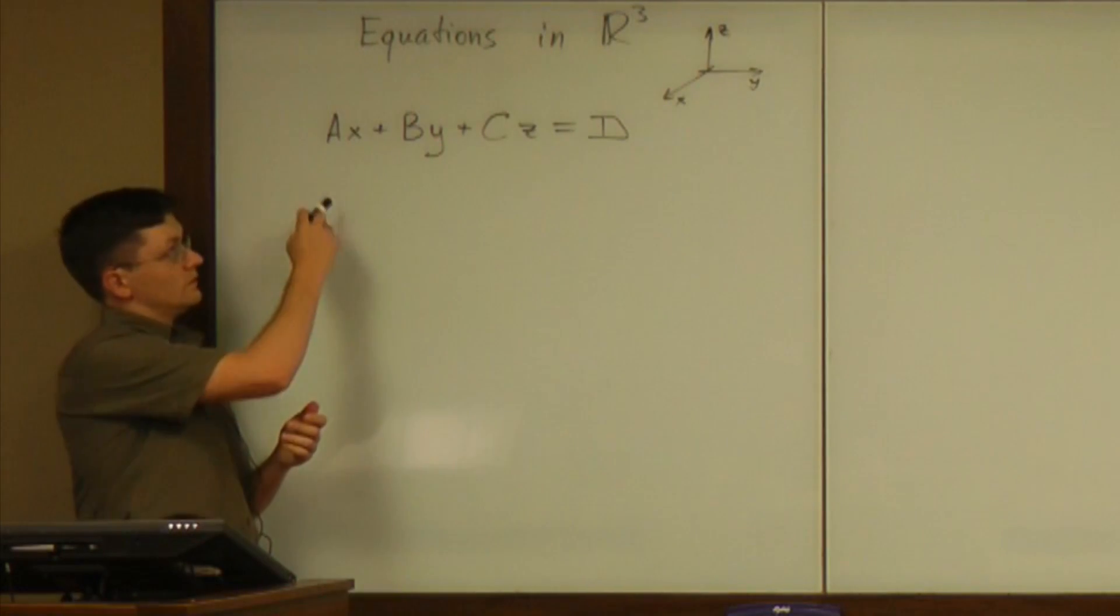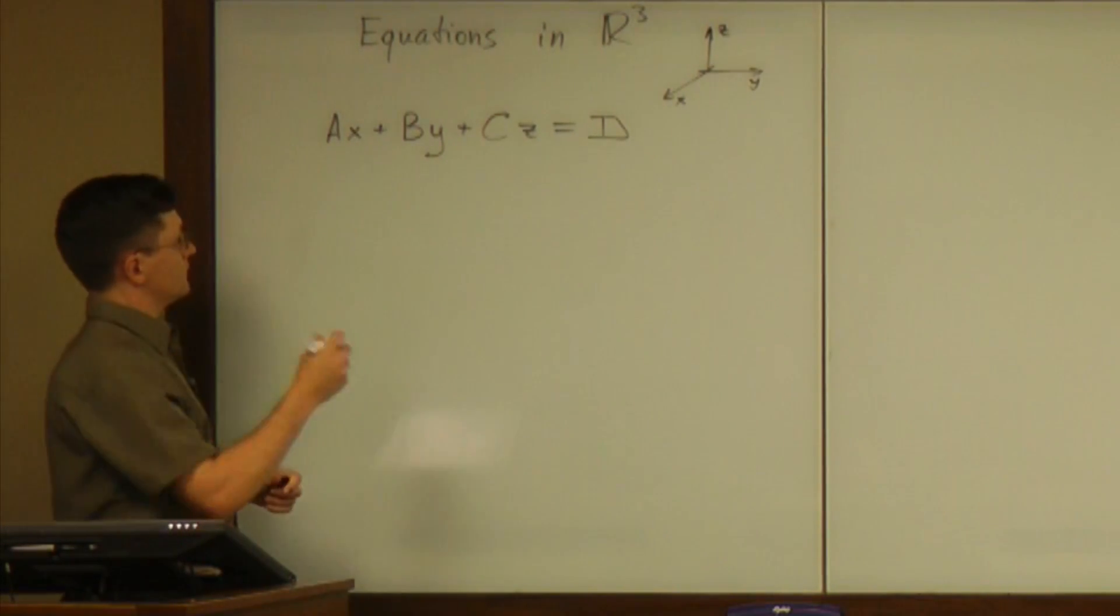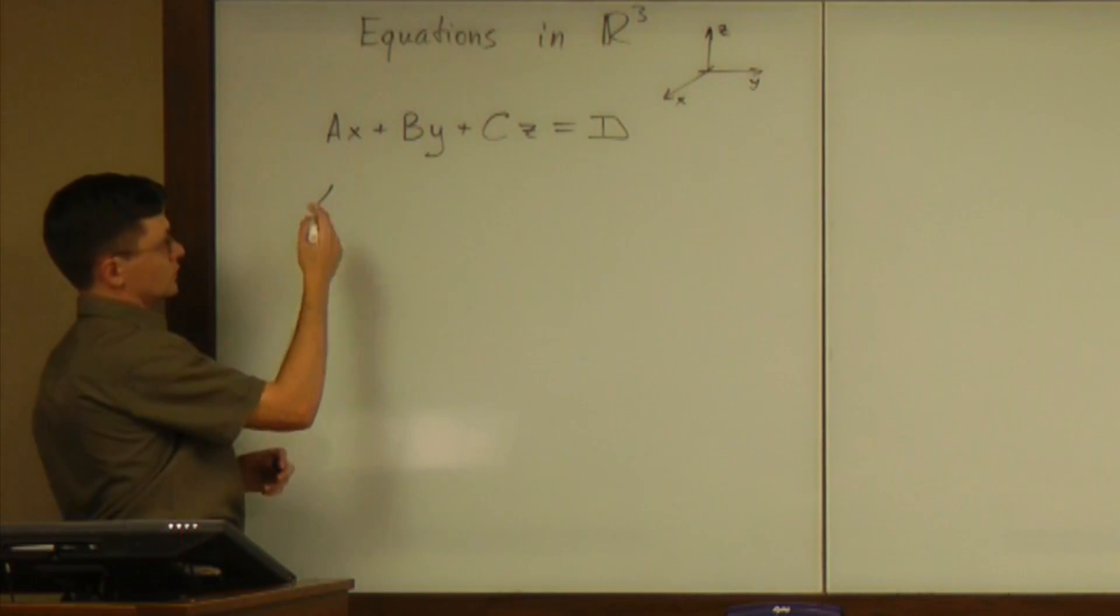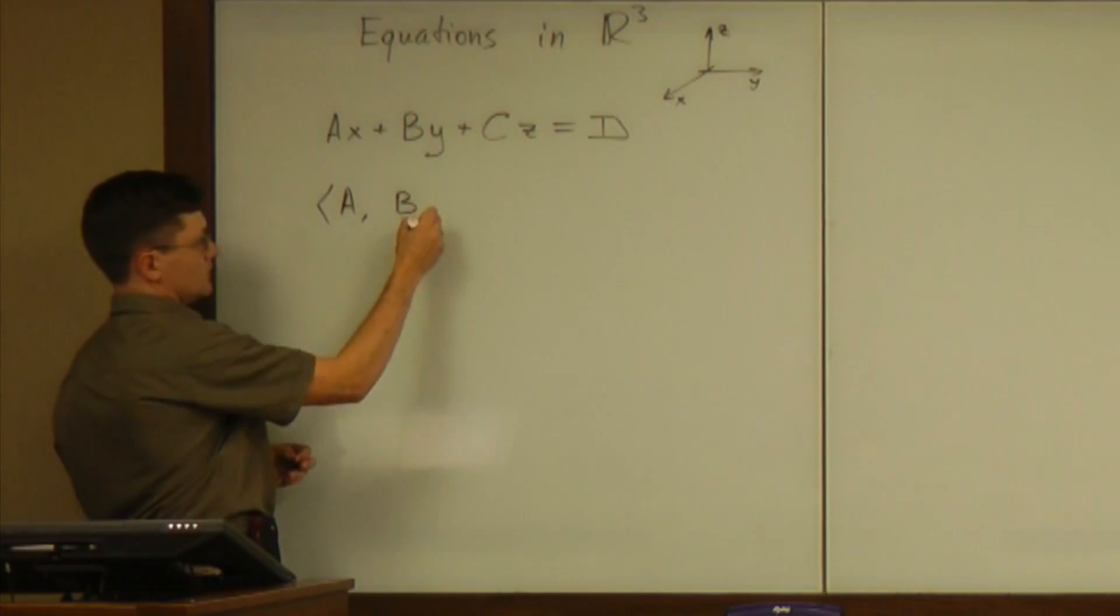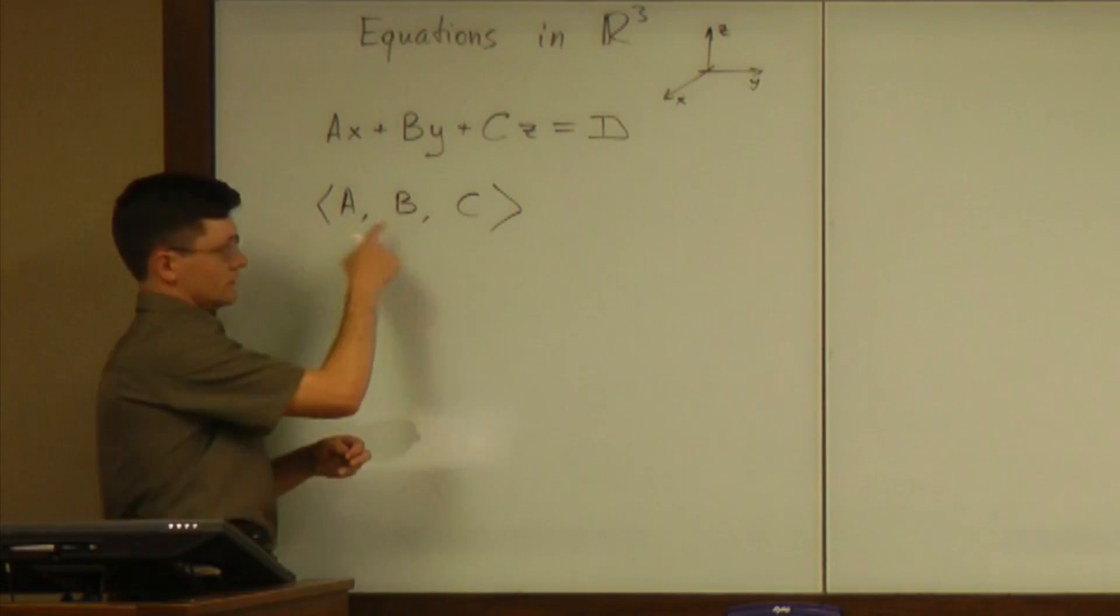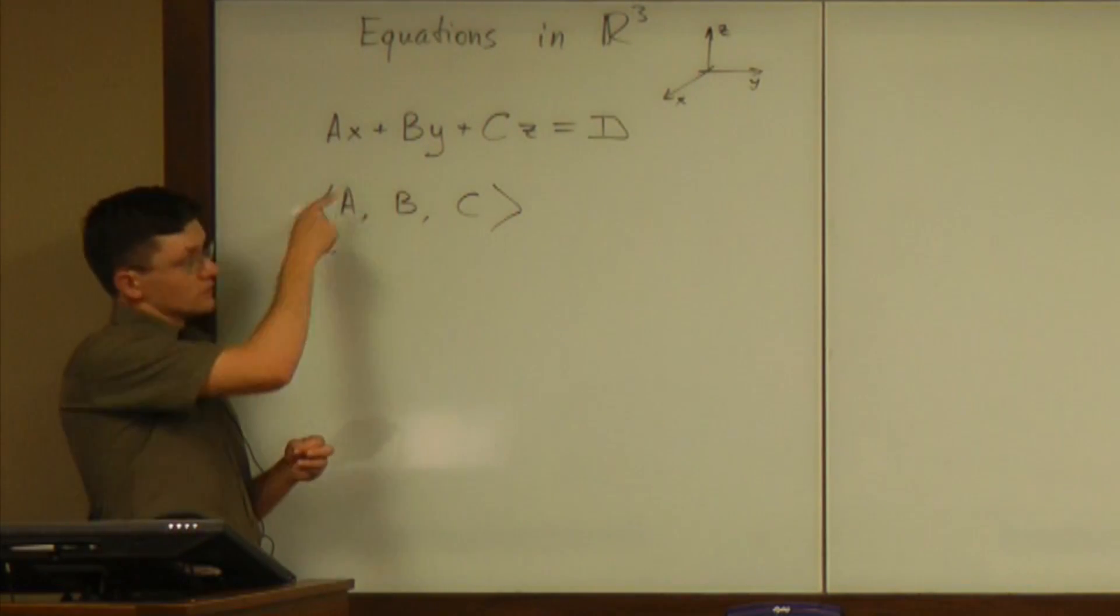And the file explains why that equation describes a plane. And the outcome of that simple discussion in the file is that the vector made by those a, b, and c, that three-dimensional vector, is always perpendicular to that plane.